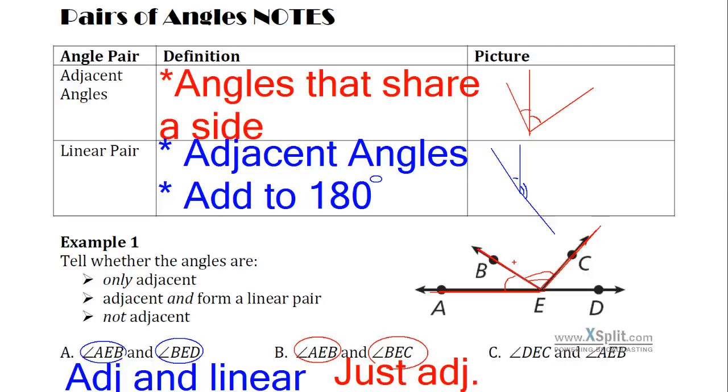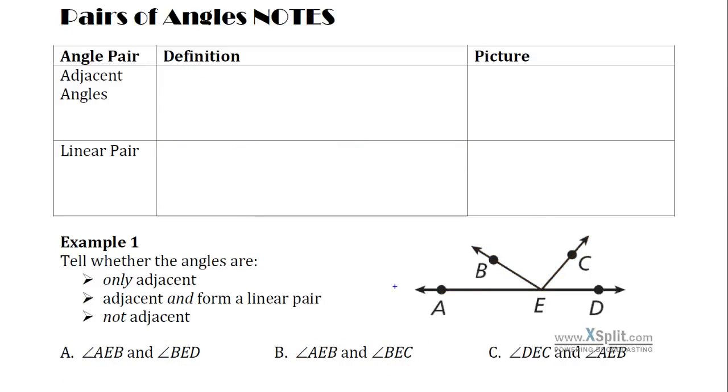Last one up here. Angle DEC and AEB. DEC is going to be this one. AEB is going to be this one over here. Well, even though they look like they're a linear pair, it looks like they're forming a straight line, certainly, right? Even though that's the case, they're not adjacent to each other. They don't share a side. They share a point E, but they don't share an entire side together, these two angles. So we'd consider those not adjacent, and by definition, they can't be a linear pair.